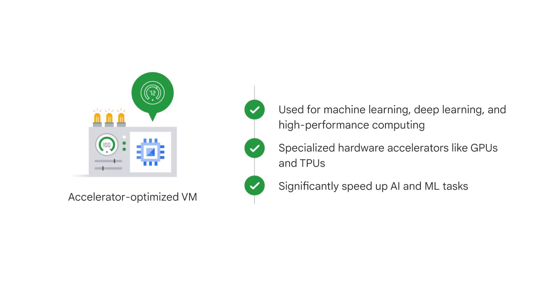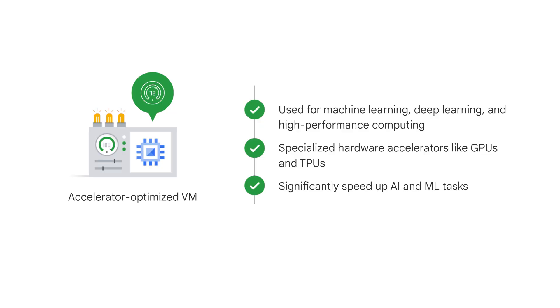Accelerator-optimized machines are used for machine learning, deep learning, and high-performance computing. These machines have specialized hardware accelerators like GPUs and TPUs, and they significantly speed up AI and ML tasks. You can learn all about virtual machines by enrolling in the...